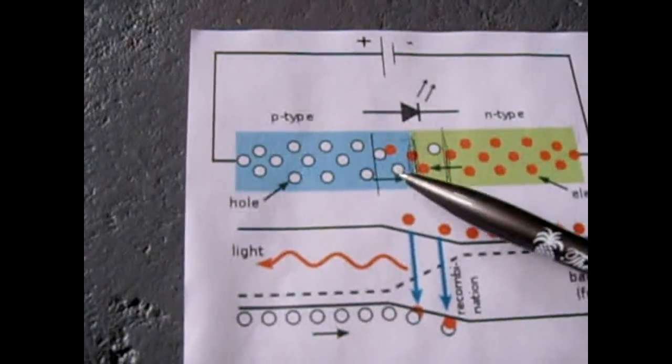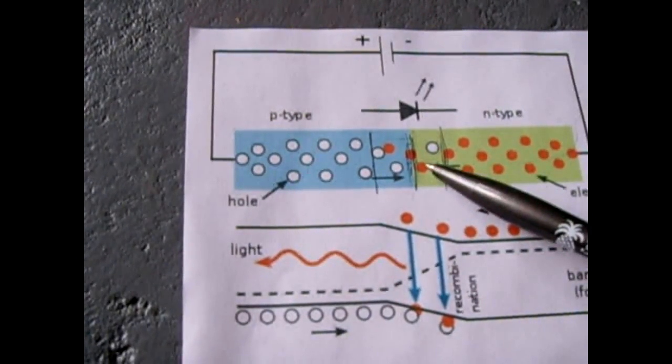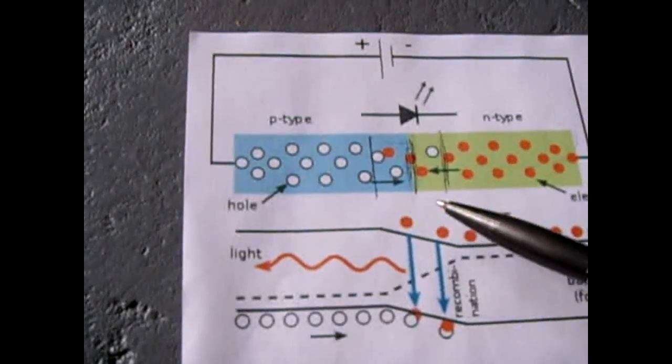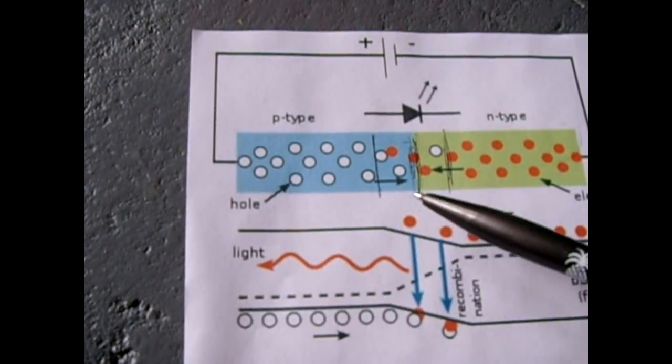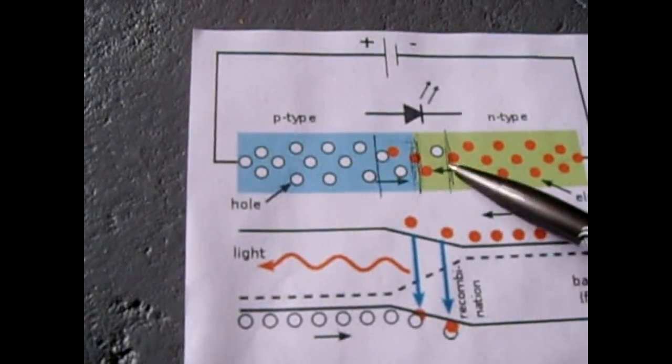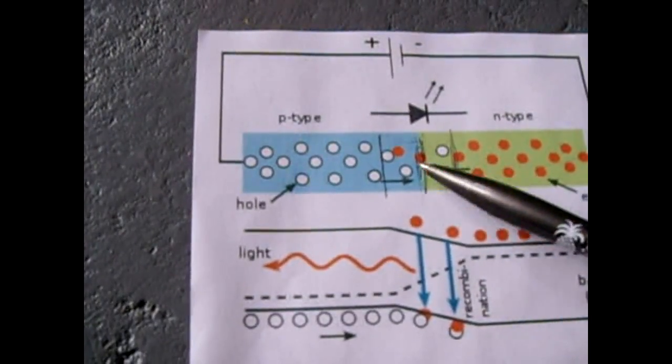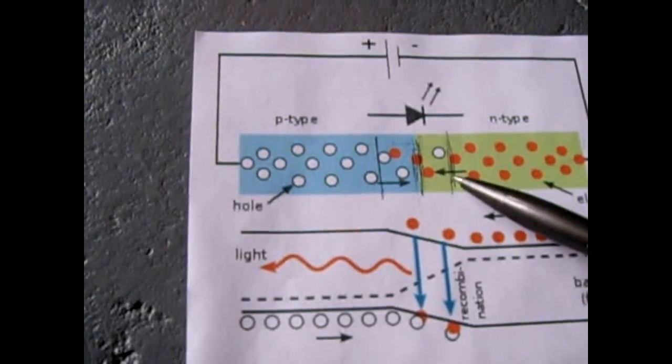The colors of an LED are determined by two things: the substrate that's used and the impurities they add, called doping, to enhance the colors. The most important factor is the amount of gap that the electron has to jump across. If it's a bigger gap, more energy is given off and you'll be looking at visible light.